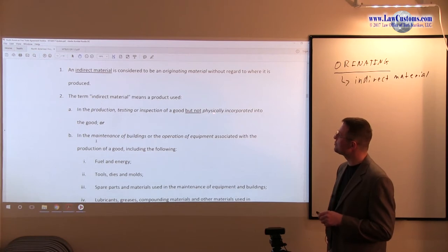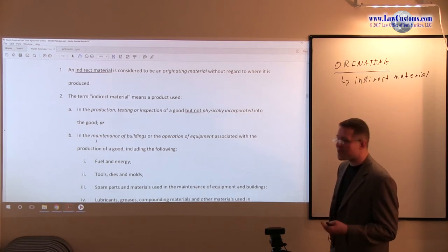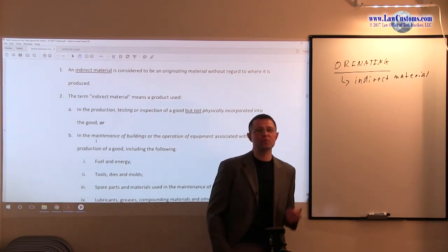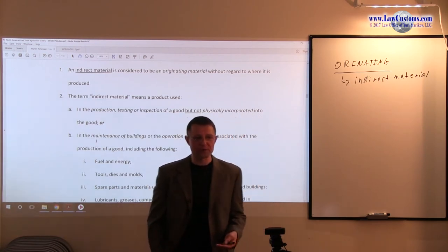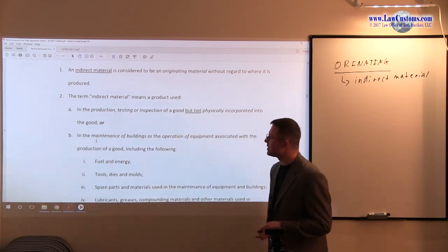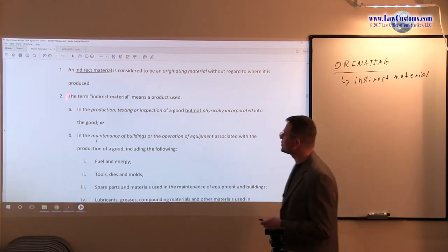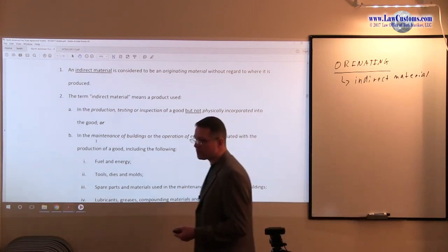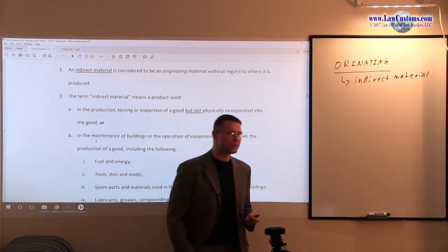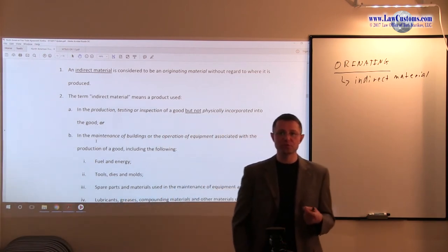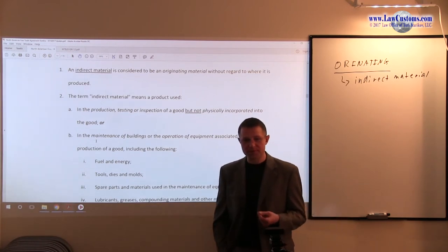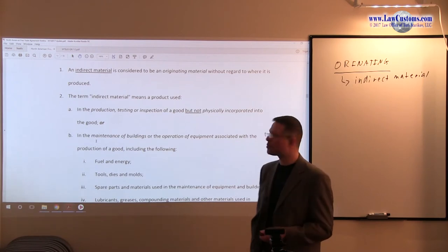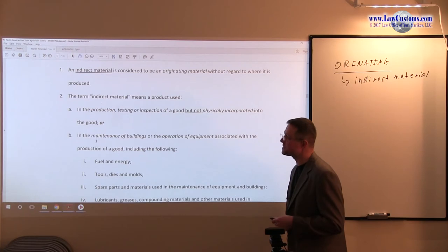Here is the buzzword: not physically incorporated. If you use a chemical substance to create a reaction to make a new chemical compound, that is incorporation. However, if you have things used in production, testing, and inspection — for example, going back to that chemical reaction example, if you use a chemical kit to test the properties after you made that chemical reaction — then that is not physically incorporated. That is indirect, and it qualifies as testing and inspection.